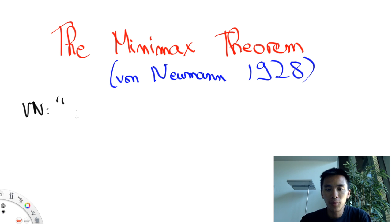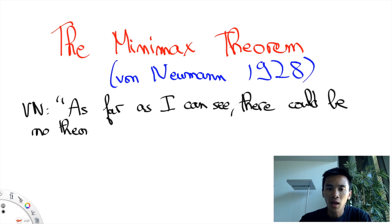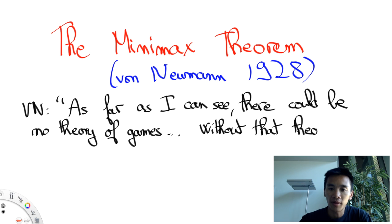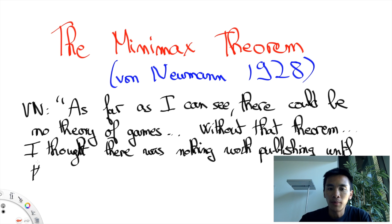Regarding the Minimax theorem, von Neumann would later say, as far as I can see, there could be no theory of games without that theorem. I thought there was nothing worth publishing until the Minimax theorem was proved.